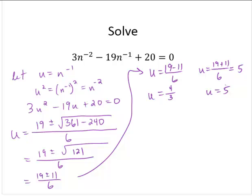But remember we're not done, we made a substitution. We needed to solve for n. So if u is 4 thirds, that means that n to the negative first is 4 thirds. Well that's the same as saying the reciprocal of n is 4 thirds. So then n would be 3 fourths.